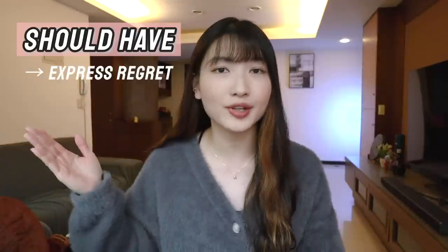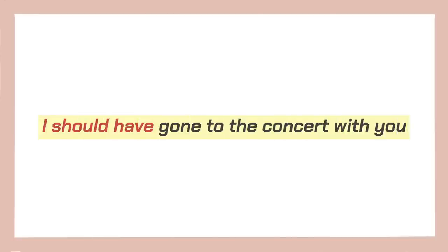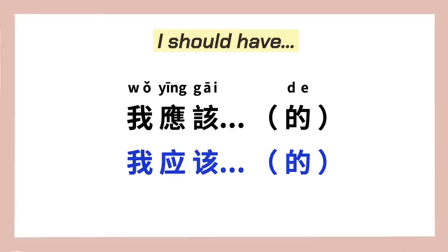Let's start with expressing regret in Chinese. In English, you can use 'should have' to express regret for something you did or didn't do in the past. To say 'I should have gone to the concert with you,' you can say 我应该跟你一起去演唱会的. In Chinese, to say 'I should have done something,' we often say 我应该 [do something] 的. This 的 at the end adds a tone of certainty to the sentence, because when we look back at our past, we often become certain about what the best choice was. However, if the context is clear enough, 的 is optional.